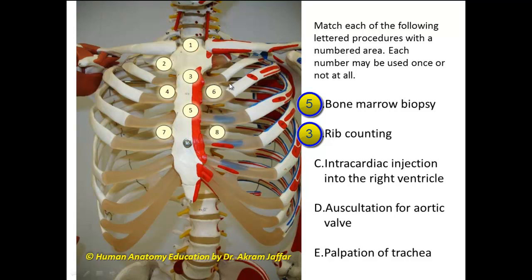The space below the second costal cartilage is the second intercostal space, then the third, the third intercostal space, the fourth, and the fourth intercostal space, and so on. We don't use the first rib because it is hidden by the clavicle and is not easily felt on the anterior thoracic wall.